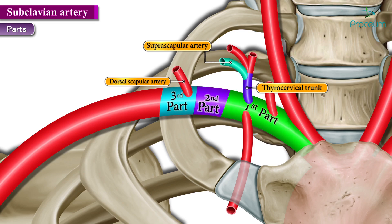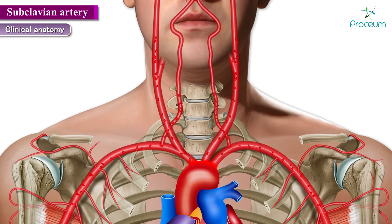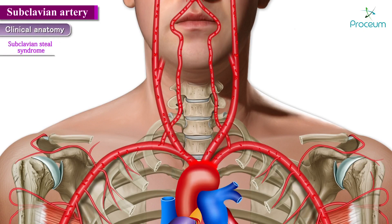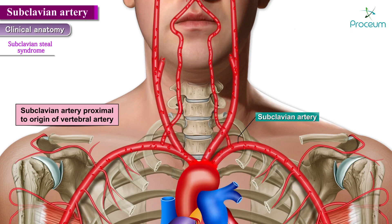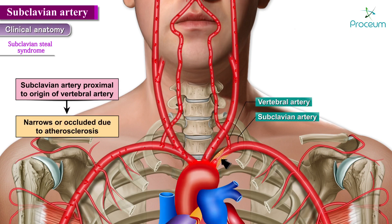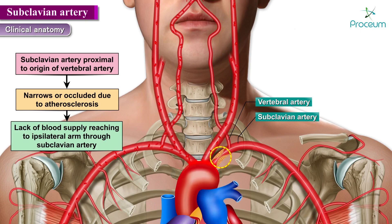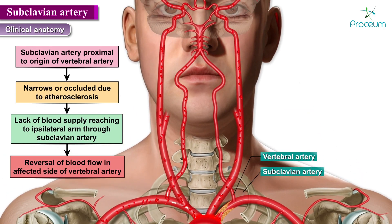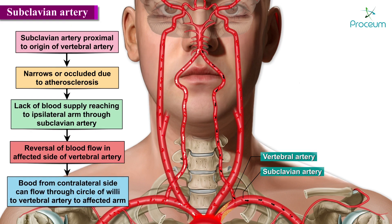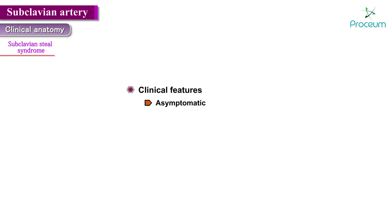Now let us discuss the clinical anatomy: subclavian steal syndrome. This is a condition in which the subclavian artery proximal to the origin of the vertebral artery narrows or becomes occluded, usually due to atherosclerosis. This blockage results in a lack of blood supply to the ipsilateral arm, which can lead to reversal of blood flow in the affected vertebral artery, so that blood from the contralateral side flows through the circle of Willis to supply the affected arm. This condition is mostly asymptomatic.